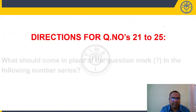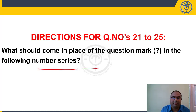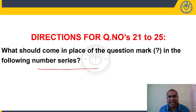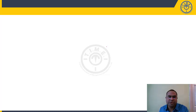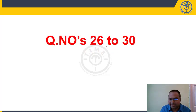Questions 21 to 25 are missing number series questions. These are simple to solve and the solutions are provided in the mock test. Please refer to the solutions provided there.